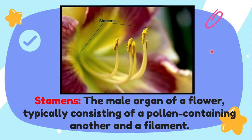Then we have stamens. Stamens is the main organ of a flower, typically consisting of a pollen-containing anther and a filament. As you can see here, the stamens are this part of the flowers, going all the way up.